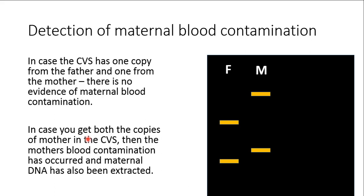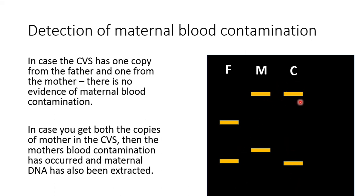Let's understand this situation. The father's VNTR pattern is shown here, the mother's VNTR pattern is shown here. When we run the VNTR pattern of the chorionic villi sample, we get a pattern where one band corresponds to the mother and the other band corresponds to the father. We can therefore say that in this chorionic villi sample there was no contamination of maternal blood, and this report is highly reliable.